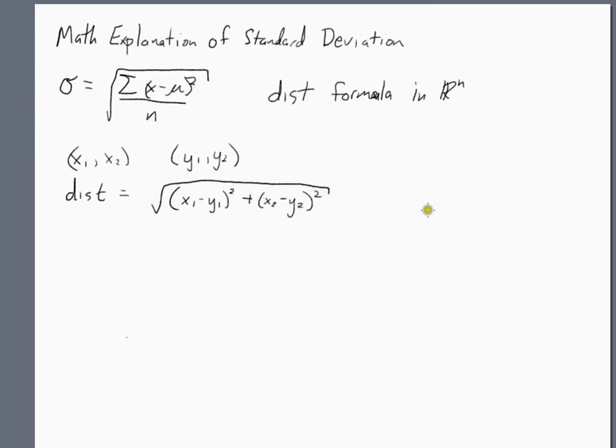And where this came from is just the Pythagorean theorem. If you draw a triangle, this is x1, x2, this is y1, y2. Well the distance you want is the straight across, but you can break that down into horizontal and vertical. This is a right triangle.